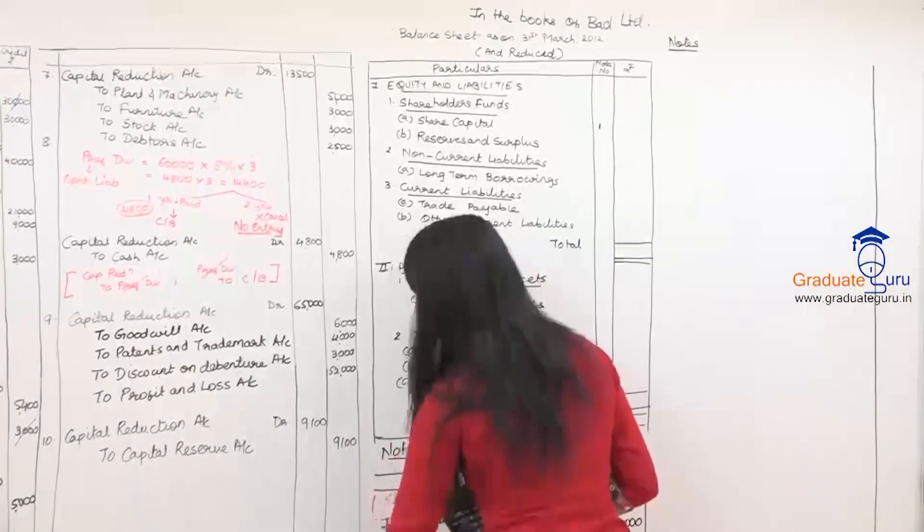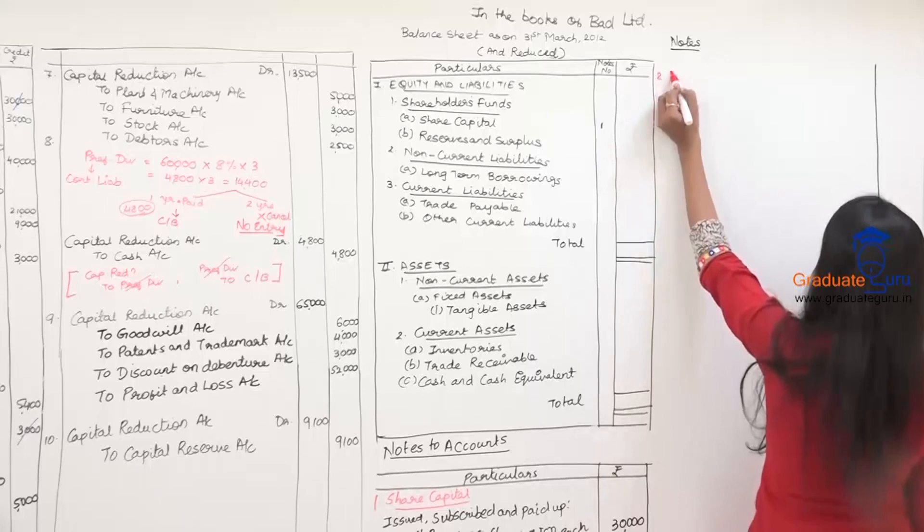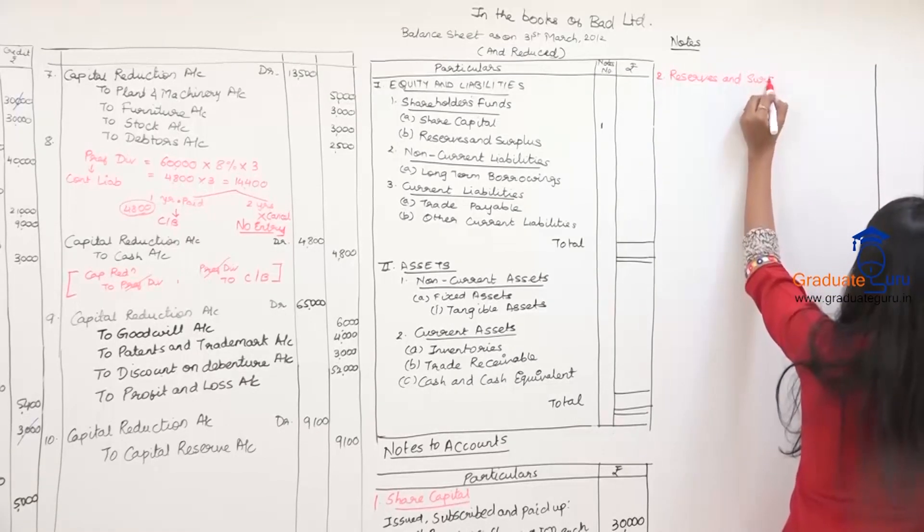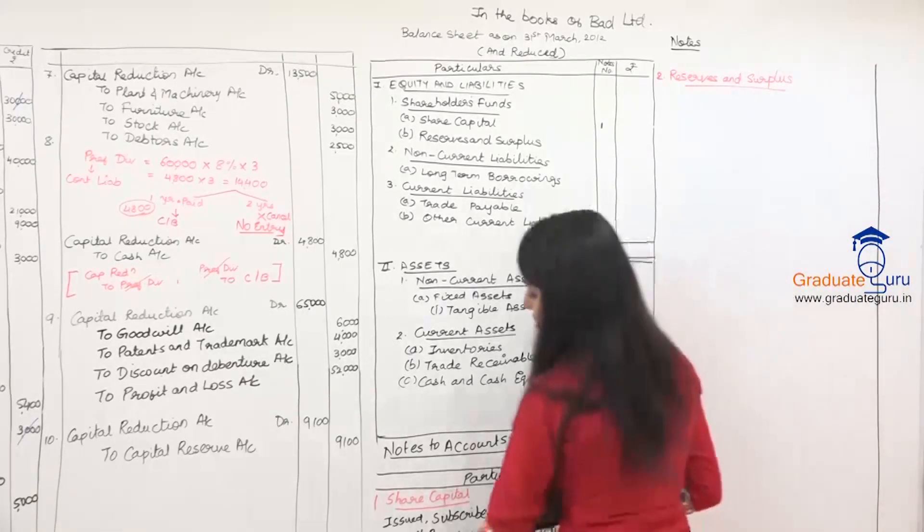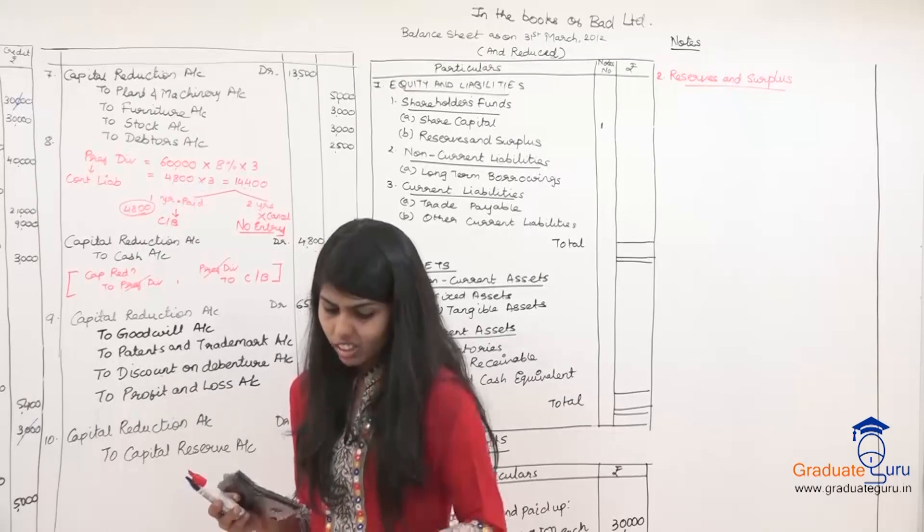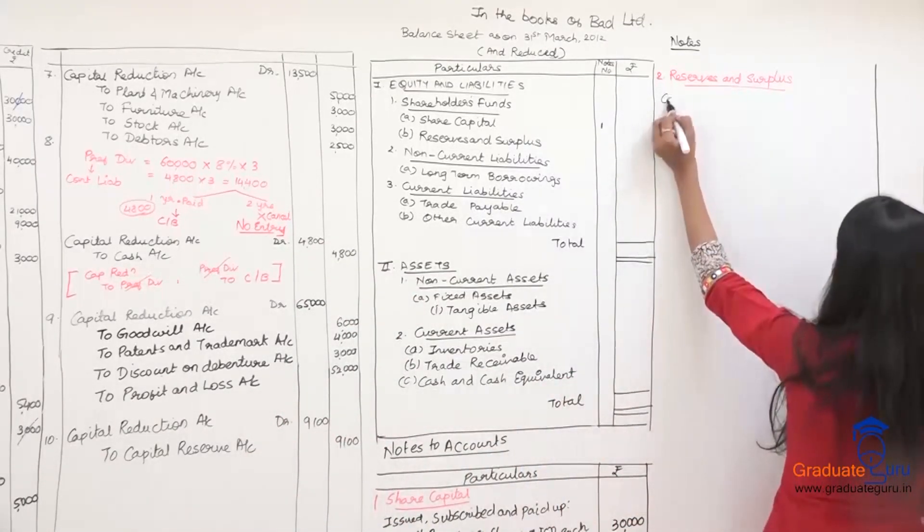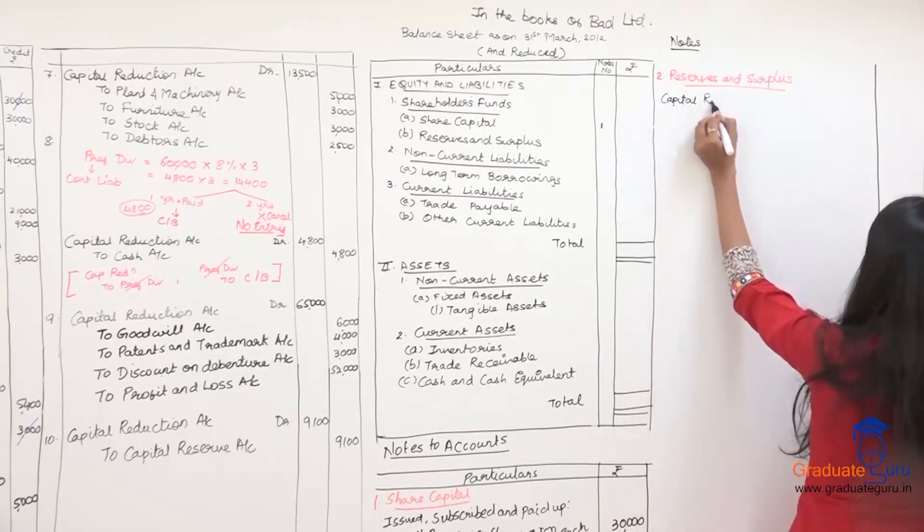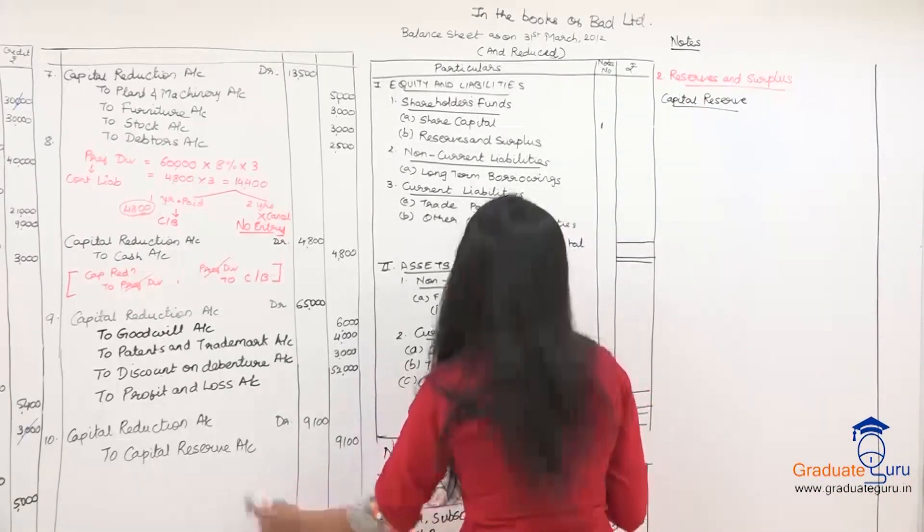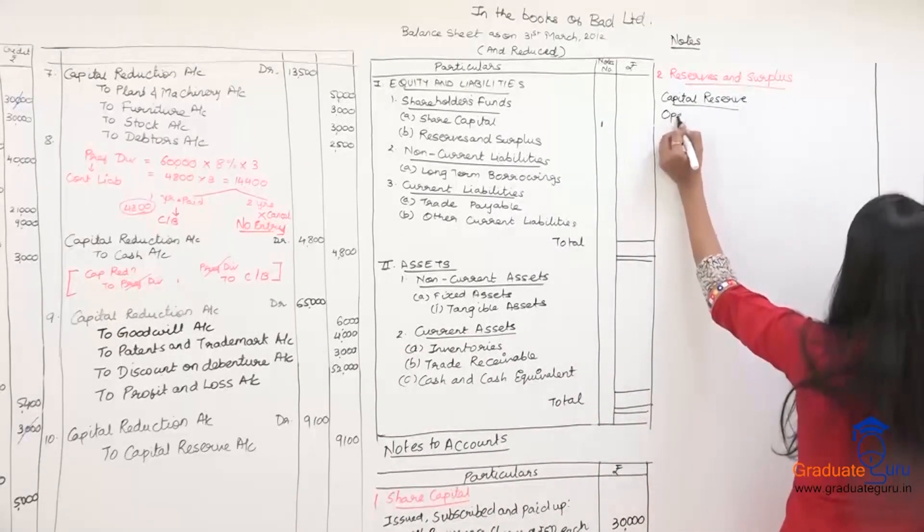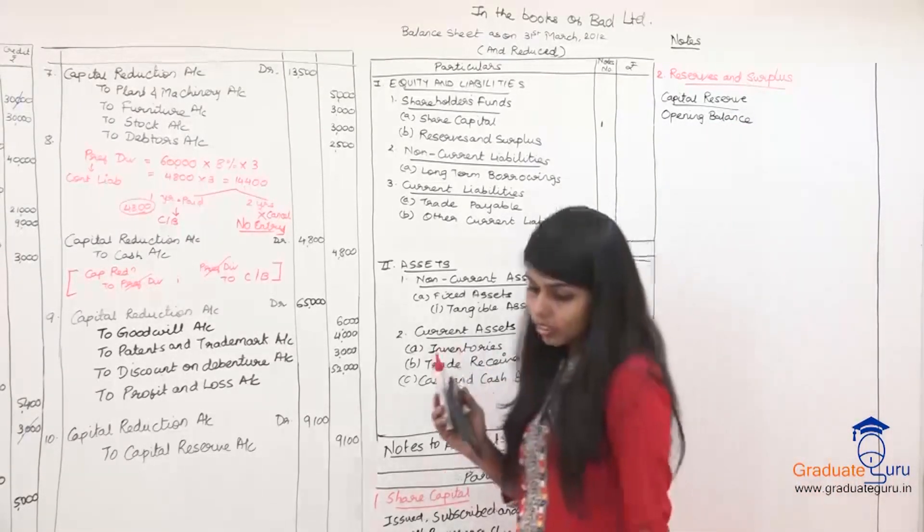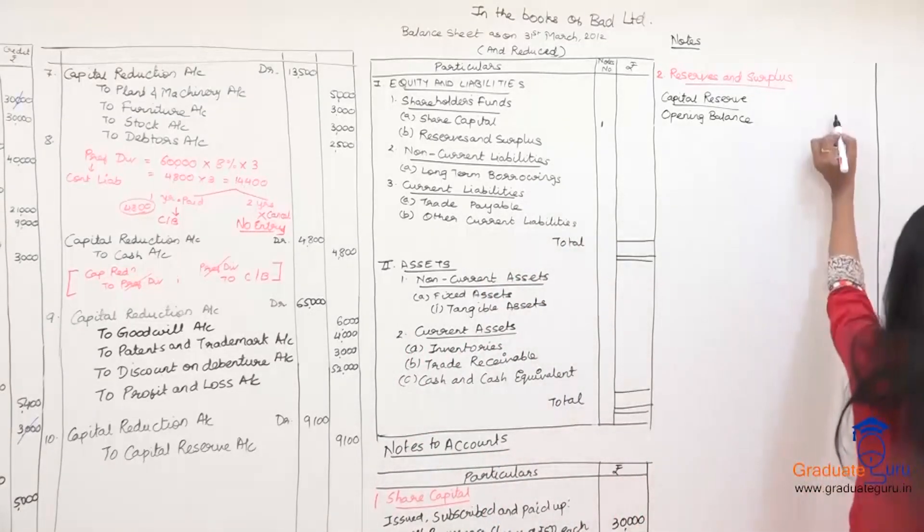It will continue here too. You will do notes. Second notes, you have to do which ones? Reserves and surplus. So second I would write reserves and surplus. Reserves and surplus mein aapke paas question mein kitna hai? Question mein capital reserve. So here I would write opening balance. Capital reserve ka opening kitna diya hai question mein? Capital reserve comes to seven thousand. Seven thousand aapko diya hua hai. Write in inner column.